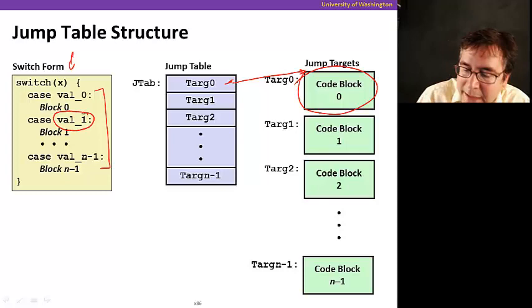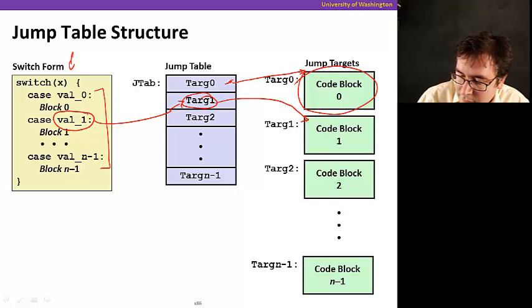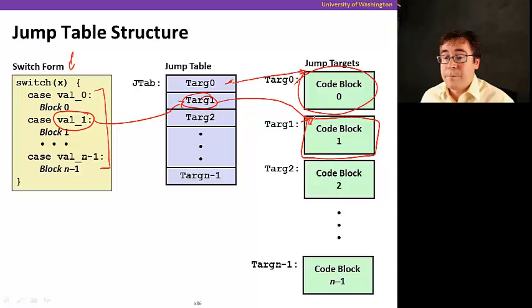So for example, if our x happens to be val1, we're going to jump, we're going to look at the jump table, we're going to go get the corresponding address and select start one and that's the code we're going to execute. We're going to execute this piece of code here.